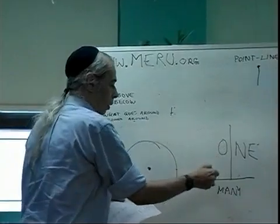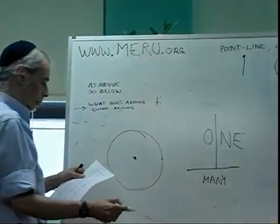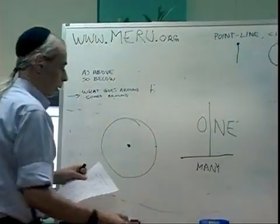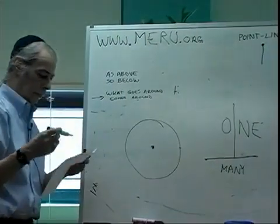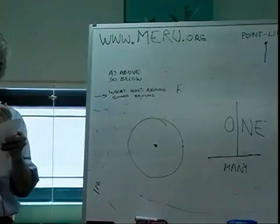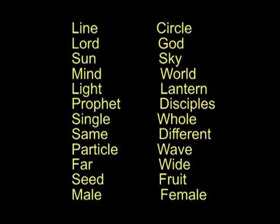This could be the particle and wave. This could be as above and so below. And of course, if we look at the earth plane, it's also what goes around comes around. We're looking at line and circle, Lord and God, sun and shield, sun and sky, pillar and cloud, thumb and fingers, mind and world, flame and lantern, prophet and disciples.